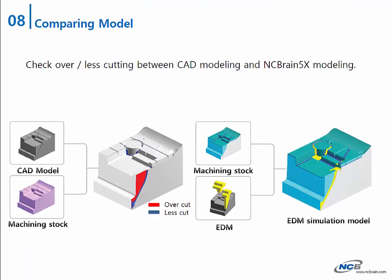Lastly, overcut and less cut caused by NC data and tool mistakes will cause big problems. Overcut and less cut will be checked by comparison of CAD model and simulation model. The advanced electric discharge check on less cut will help electrode modeling. EDM simulation will verify electrode emission parts and core modeling.